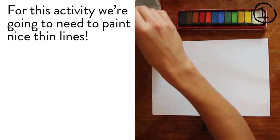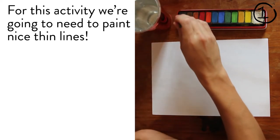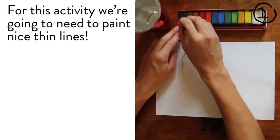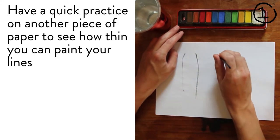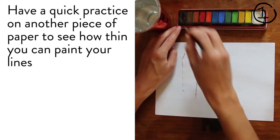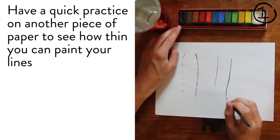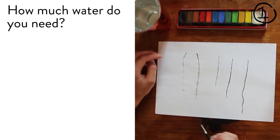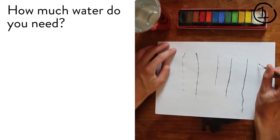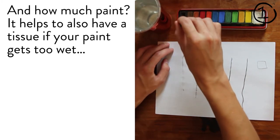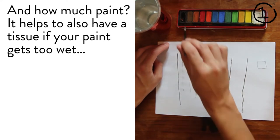For this activity we're going to need to paint nice thin lines. Have a quick practice on another piece of paper to see how thin you can paint your lines. How much water do you need? And how much paint? It helps to also have a tissue if your paint gets too wet.